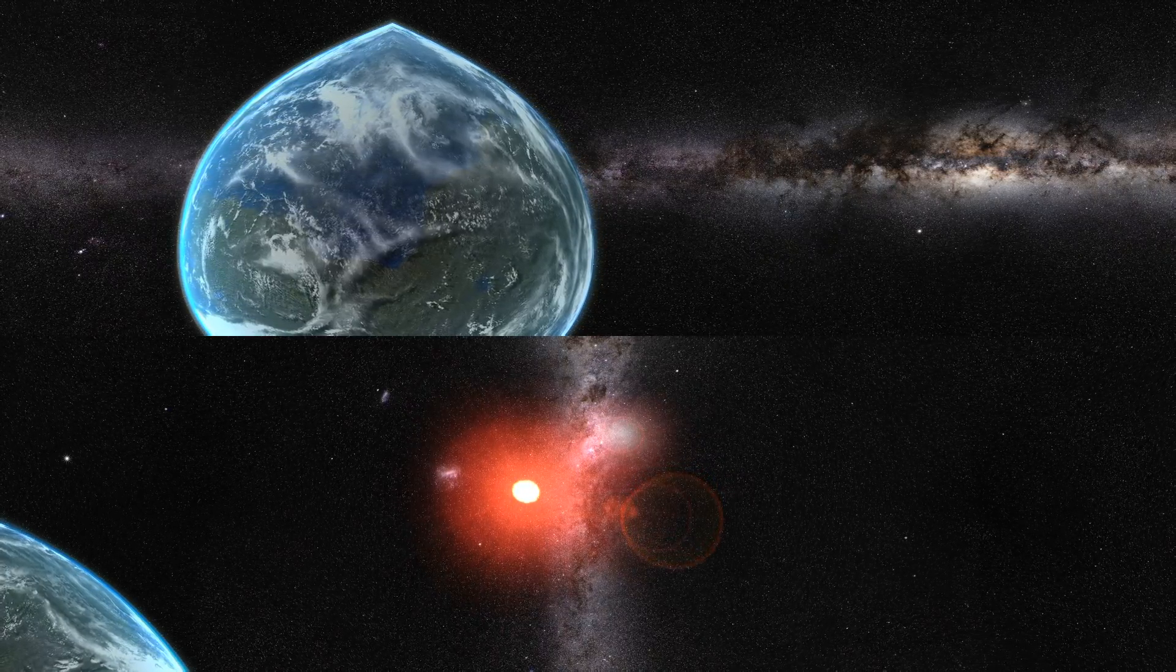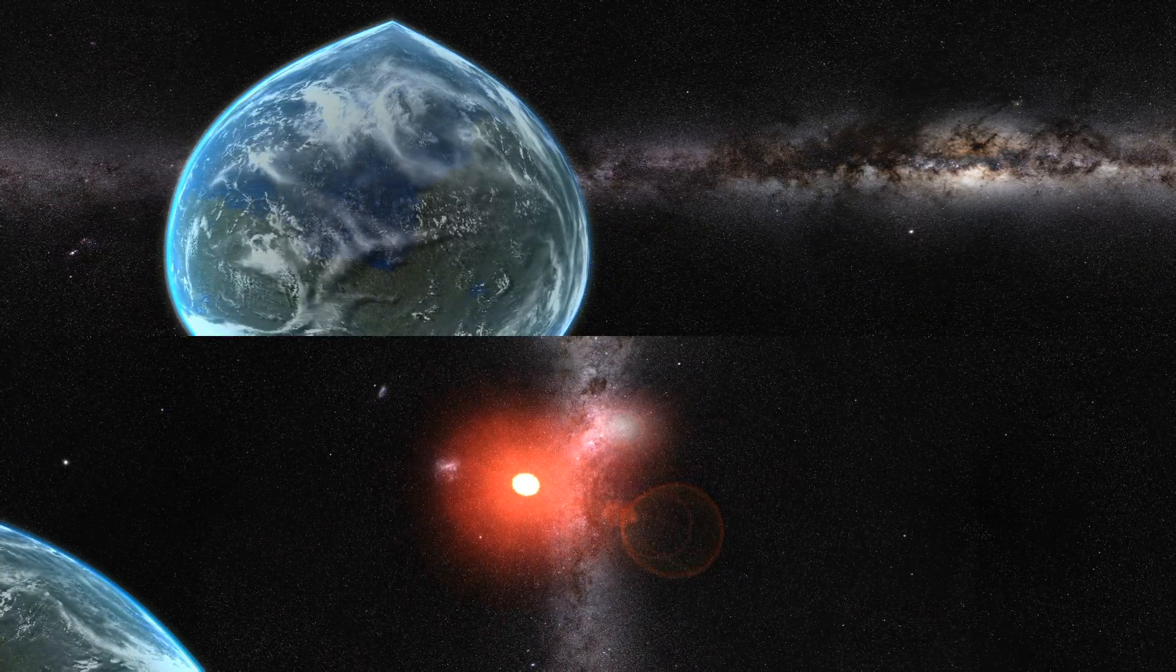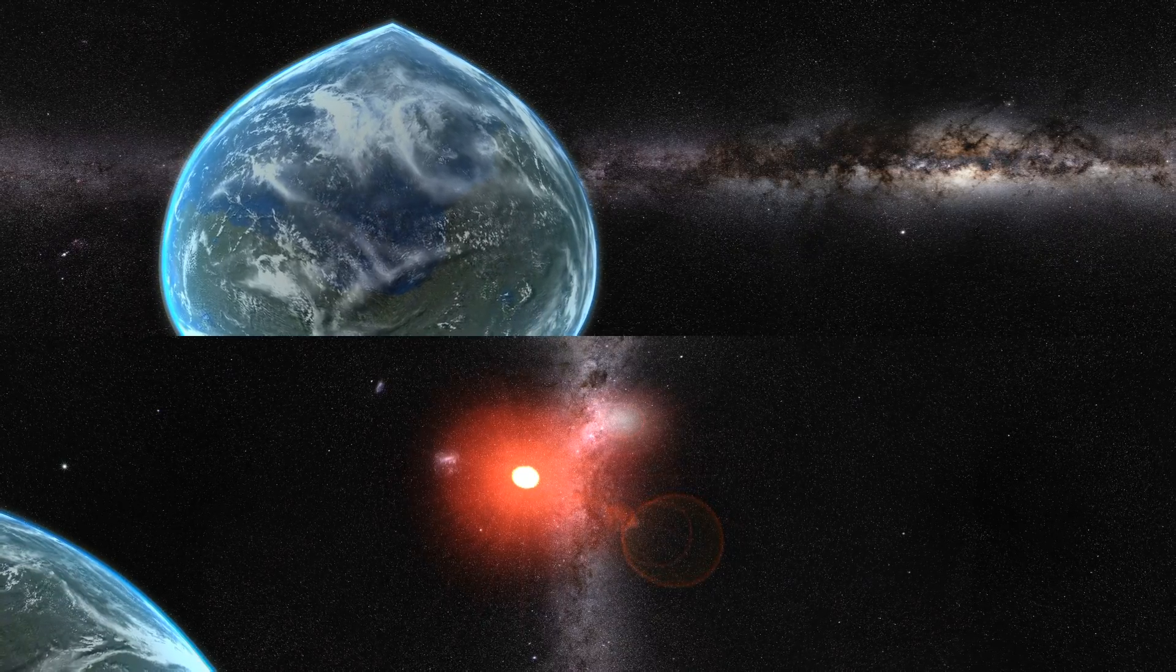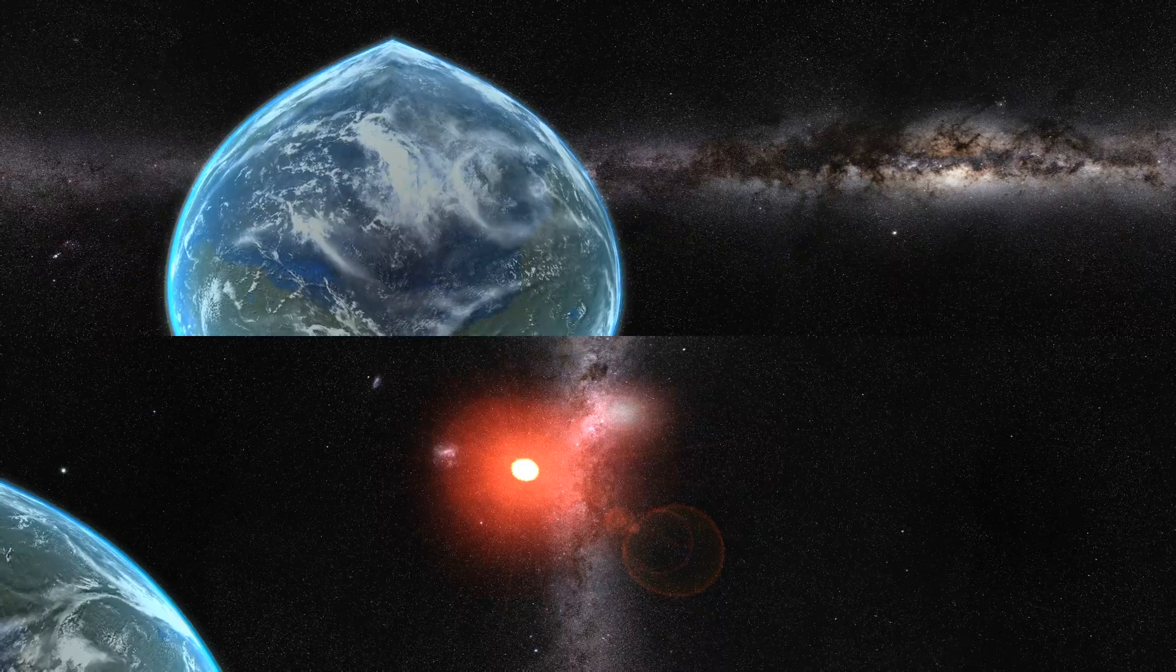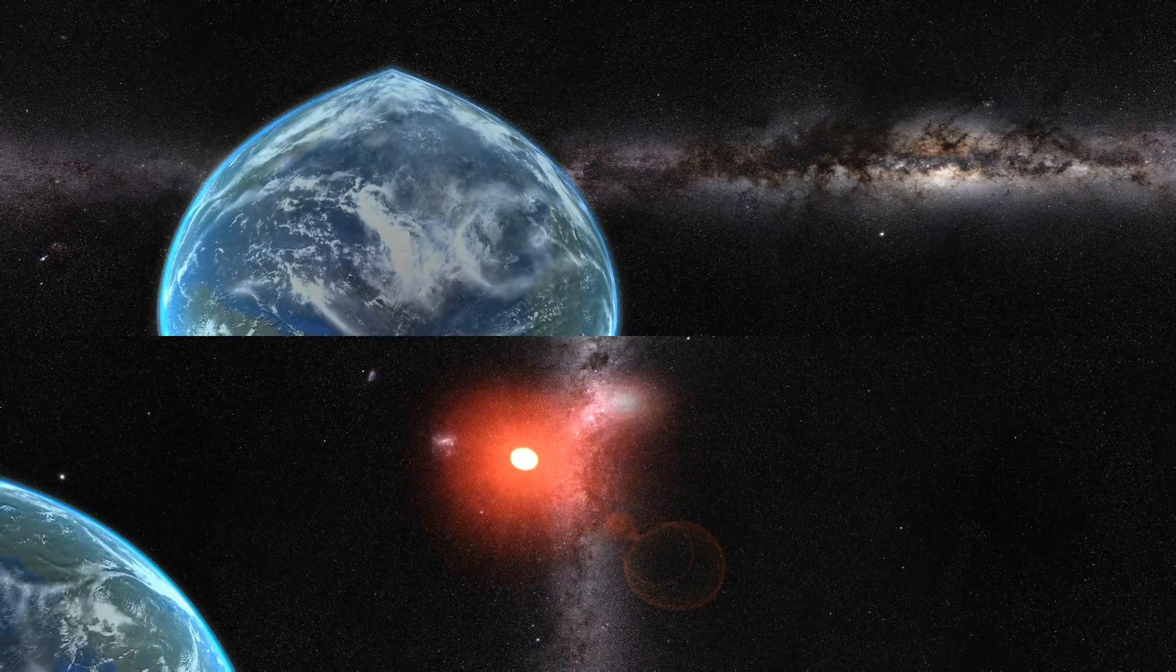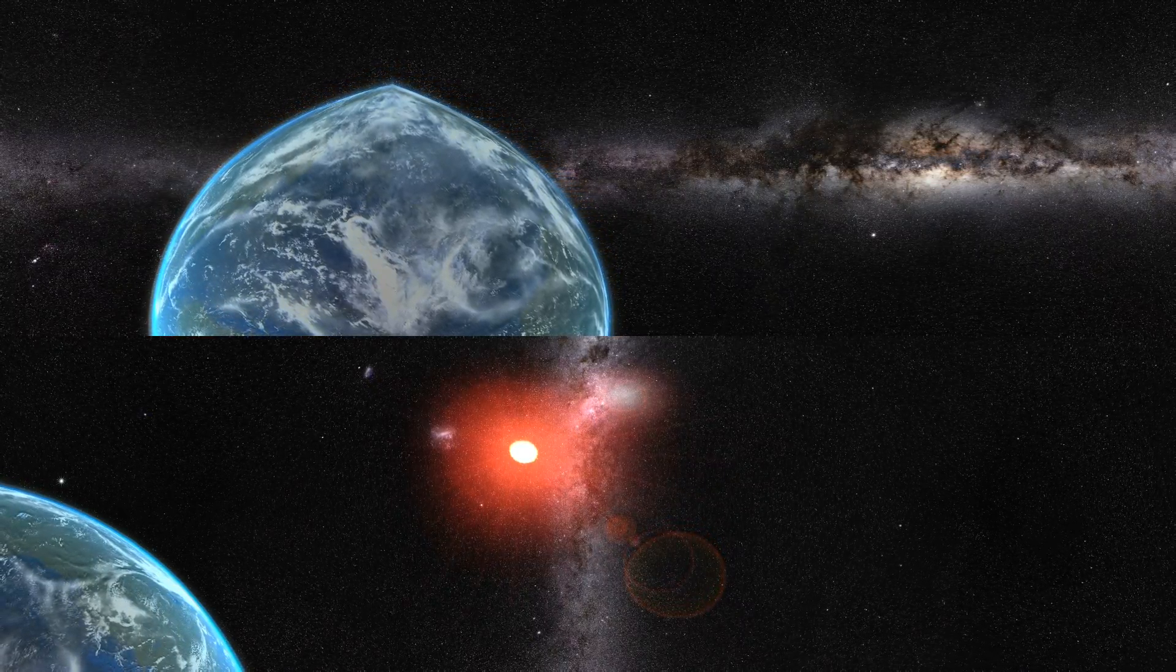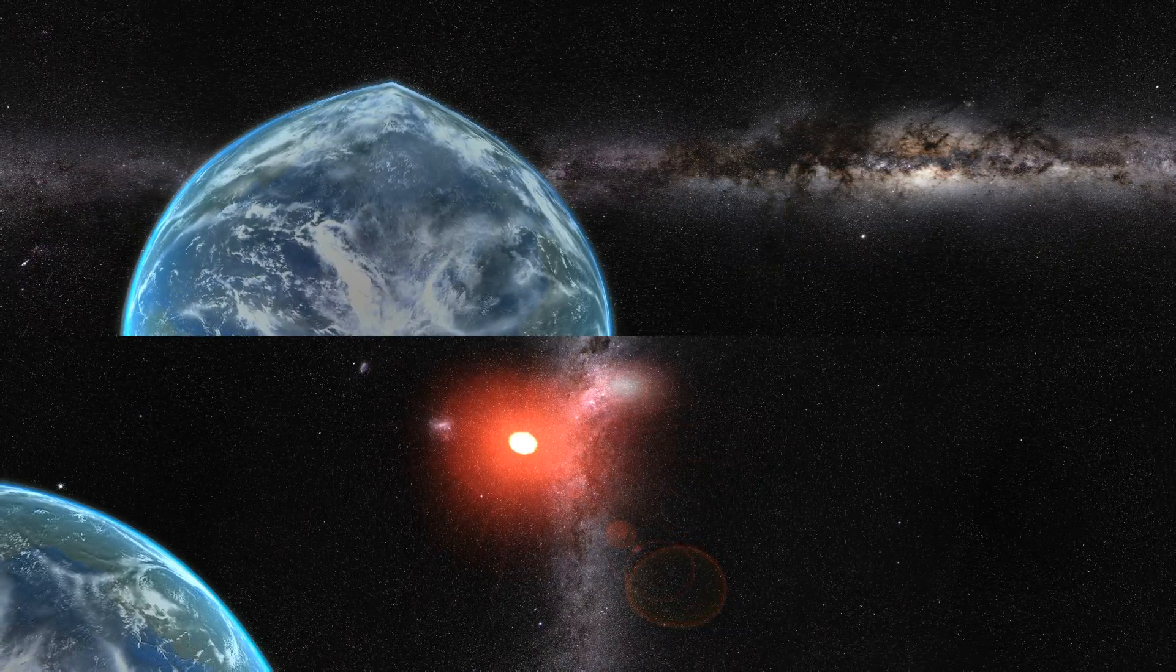Kepler spotted about two-thirds of the 4,100 confirmed exoplanets that astronomers have discovered to date. The spacecraft's observations suggest that 20 to 25 percent of the 200 billion or so stars in the Milky Way galaxy host rocky worlds in the habitable zone. That's a lot of potentially life-supporting real estate. Kepler's huge data set will keep astronomers occupied for years.